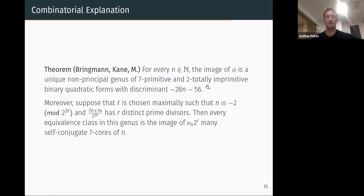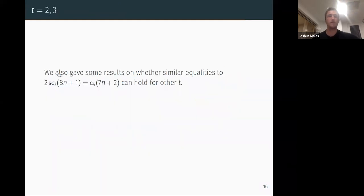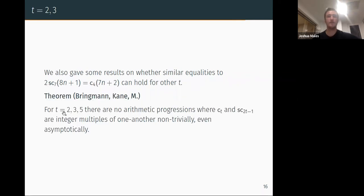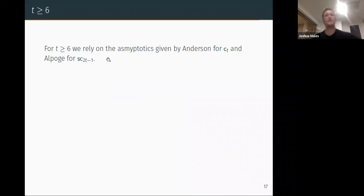Okay, so here I've been talking about sc_7 and sc_4, and I guess I have 10 minutes left to go over some other things. So we also gave some descriptions of whether identities like this curious equality can hold for other t. Here we only had seven and four. What happens if I replace this four with a 2 or 3? For t equals 2, 3, and 5, there are no arithmetic progressions where c_t and sc_(2t-1) are integral integer multiples of one another—and here non-trivially just means that sometimes they're always zero. Even better, they can't hold even asymptotically. So even if I look at just their asymptotics, whether they settle down into something like this equation, this never happens.